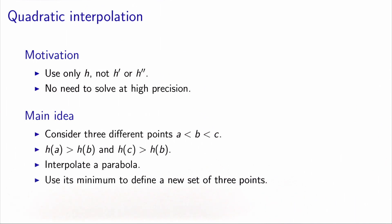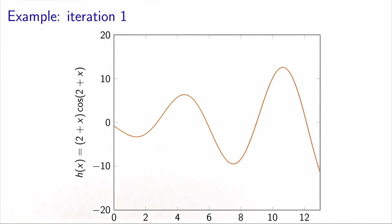We refer you to the online code for the full implementation. Here we illustrate how it works on a simple example, where the x-axis represents the value of alpha from 0 to 13, and the y-axis represents the function h. We want to find a local minimum using the quadratic interpolation method.